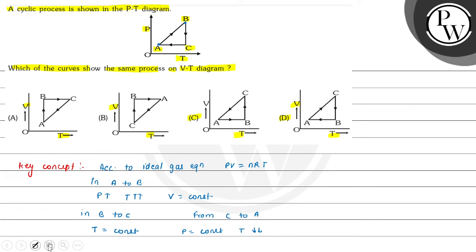So we can write this in the V-T diagram. In the V-T diagram, in the A-B process, volume is constant. That means here in option A, the A-B process shows volume increasing — so this is incorrect. In option C, volume is also constant in A-B process. Now we can check B to C.